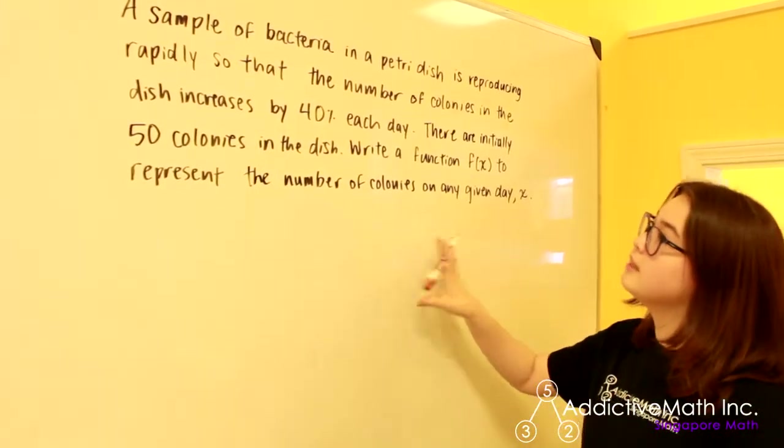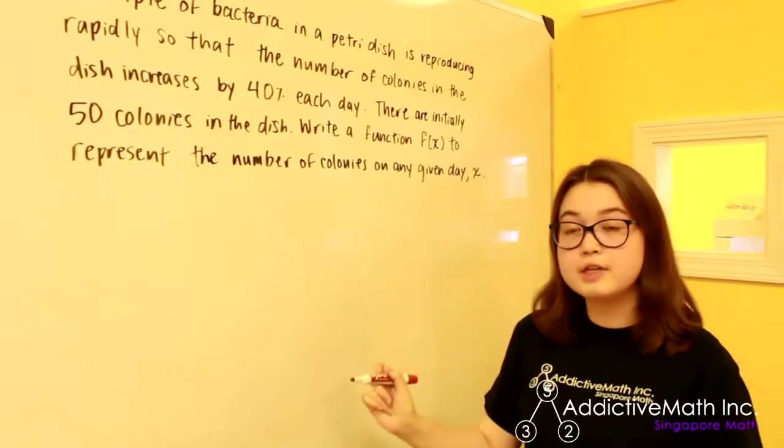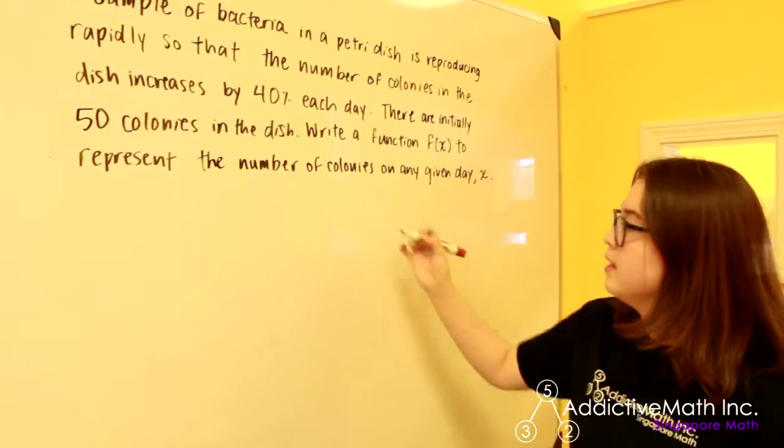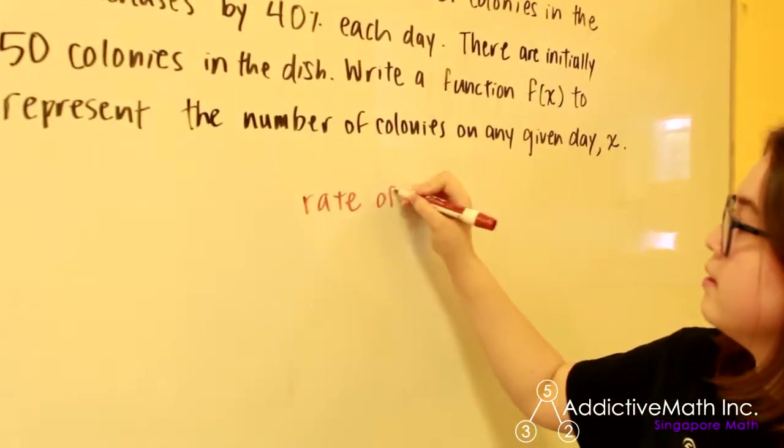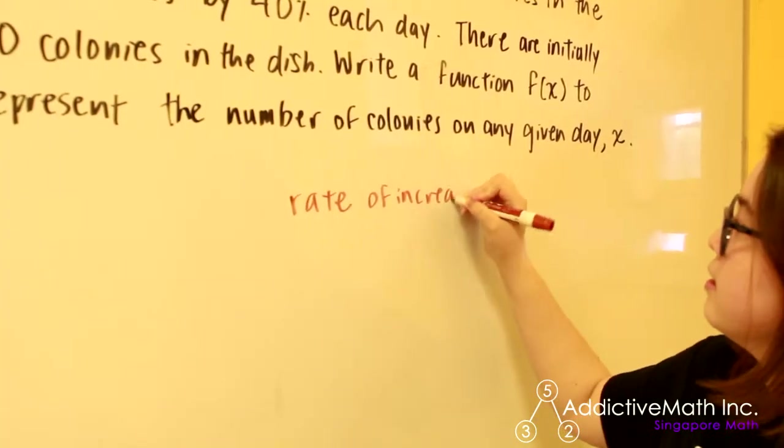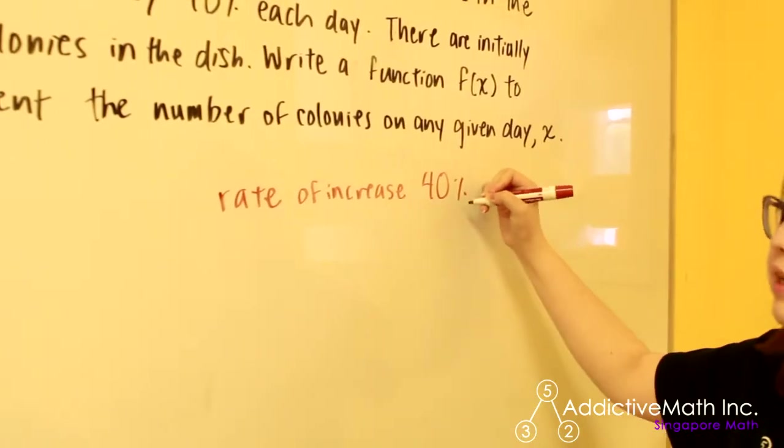A sample of bacteria is reproducing rapidly so that the number of colonies in the dish increases by 40 percent. So our rate of increase is 40 percent. This tells us that our population is growing and not decaying.